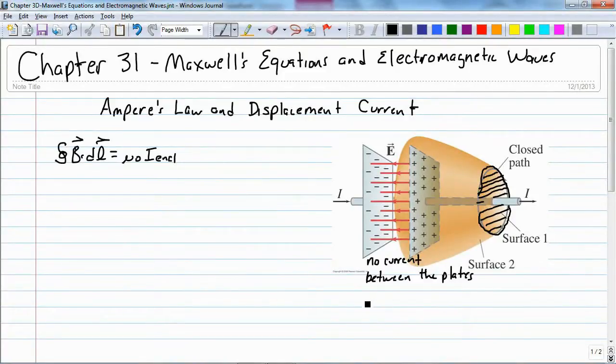We only have an electric field. So here's how Maxwell got around this problem using the ideas of capacitors.